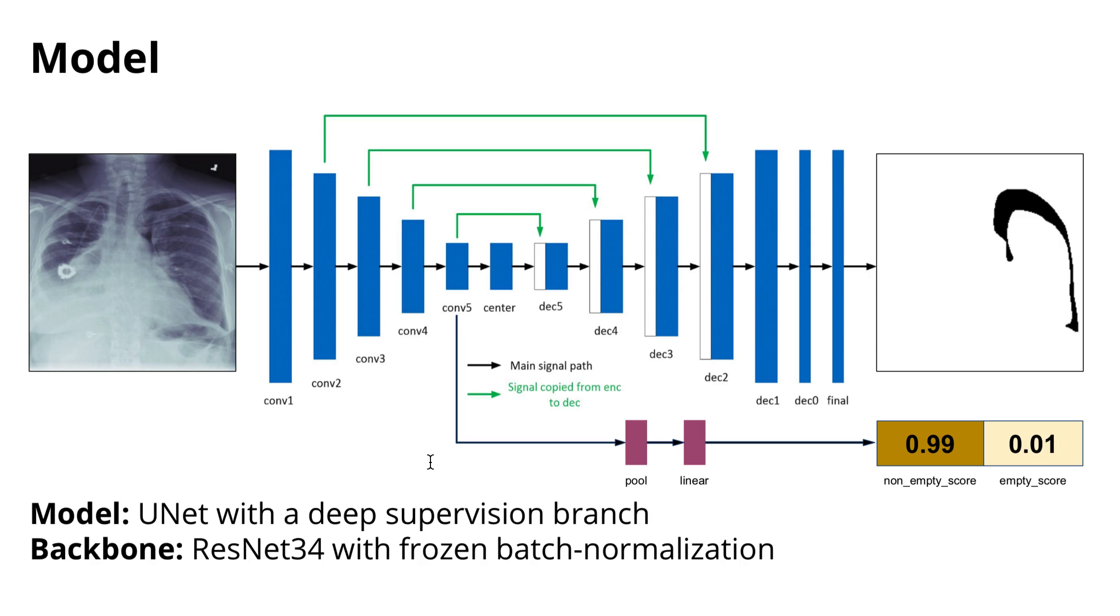I used the UNet segmentation architecture, this UNet with deep supervision branch that predicted the emptiness or non-emptiness of the mask. This was done because most of the masks were empty.